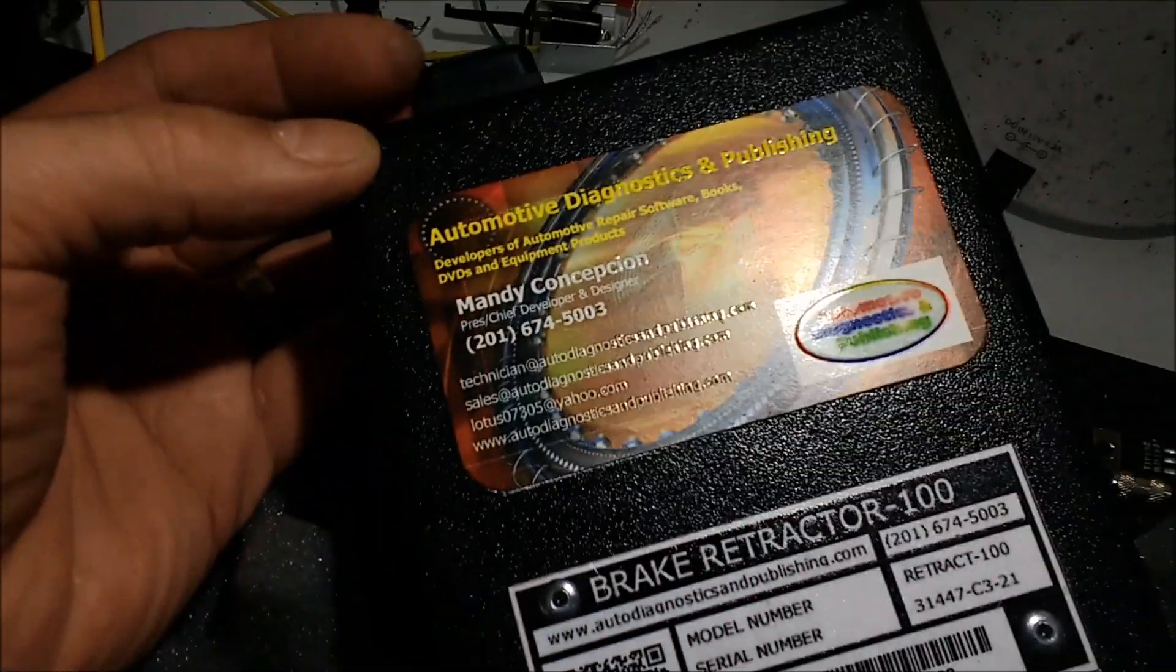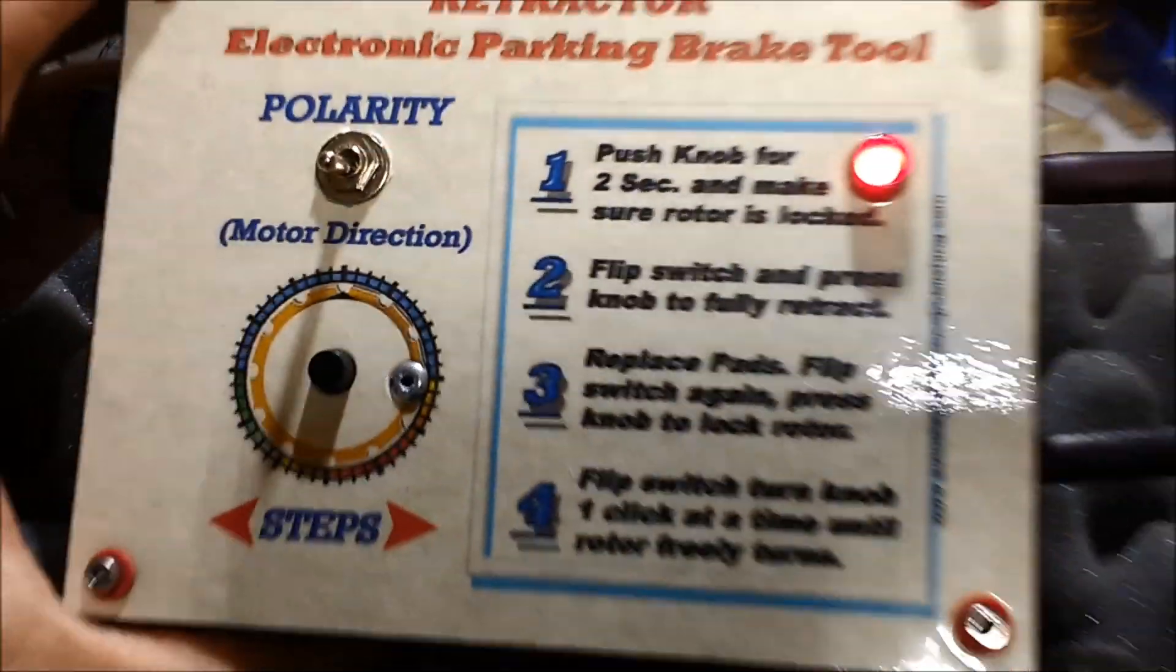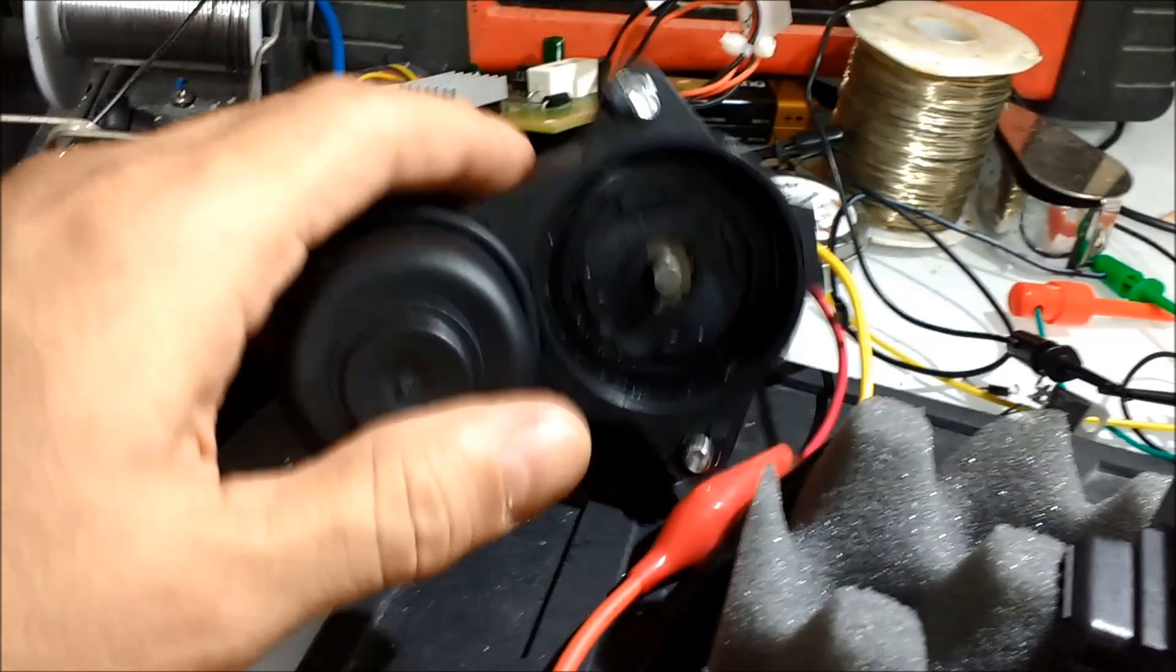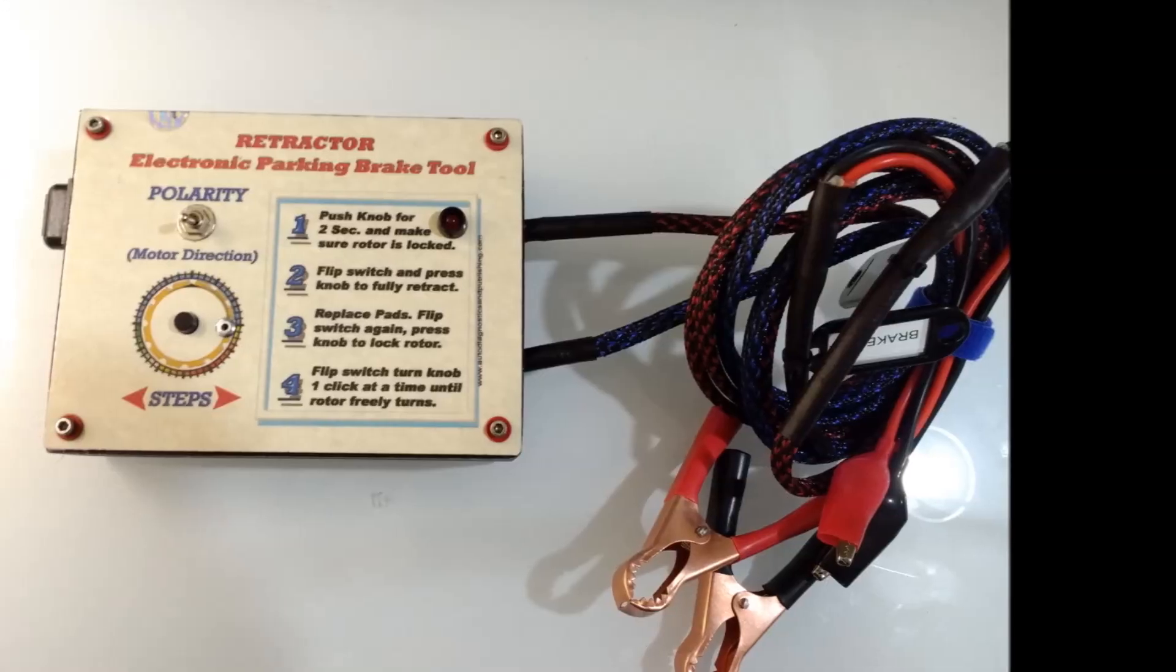The retractor electronic parking brake tool, it's a PWM controlled unit. It has one button and a polarity switch on the top. Basically it's very simple, it's very easy to use, the instructions are in the front of the unit.